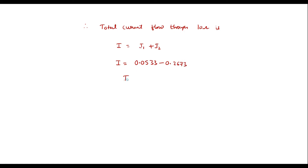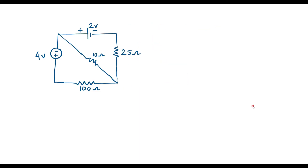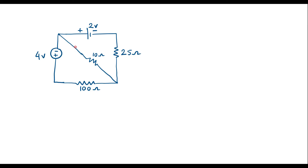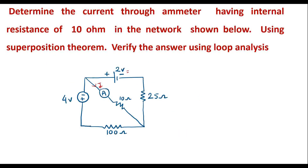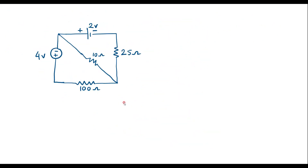So I equals 0.0533 plus (minus 0.02673), giving the total current I equals approximately 0.02657 amp. This is the reading of the emitter. Now let me verify this using loop analysis method. I will assume the same current I, which flows through the 10 ohm resistor.